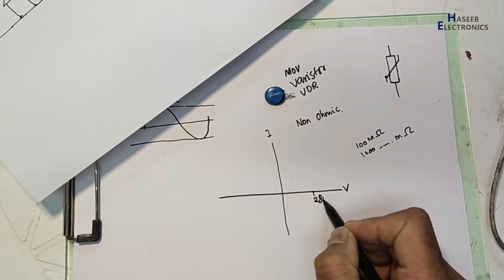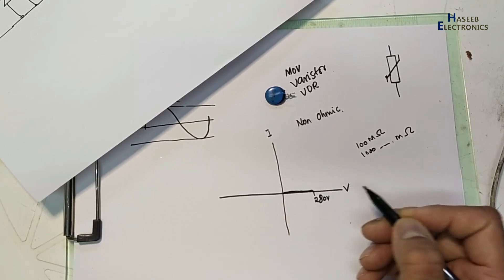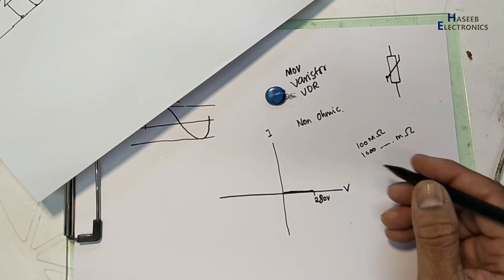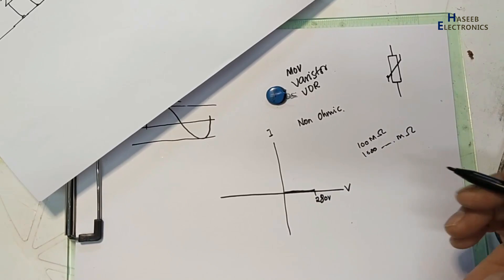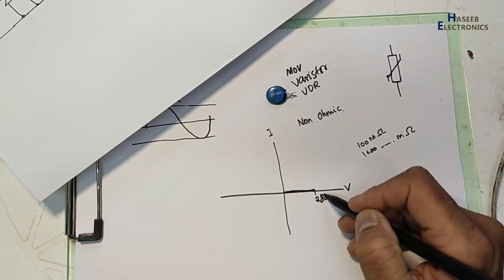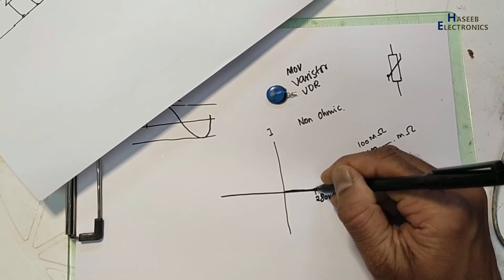This is current-voltage. When the voltages are increasing, this MOV when connected to voltage - 280 volt for example - until 280 volt it will remain silent, it will work in open circuit range, high resistance range. When the voltage exceeds this level, that is V nominal, at that time it will start to transfer in conduction range.